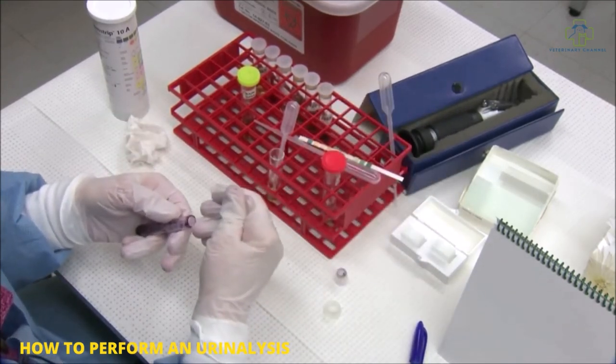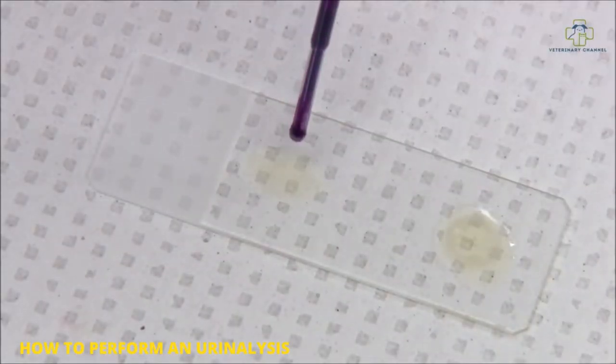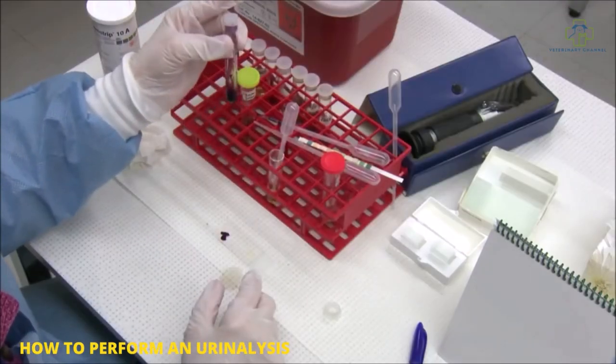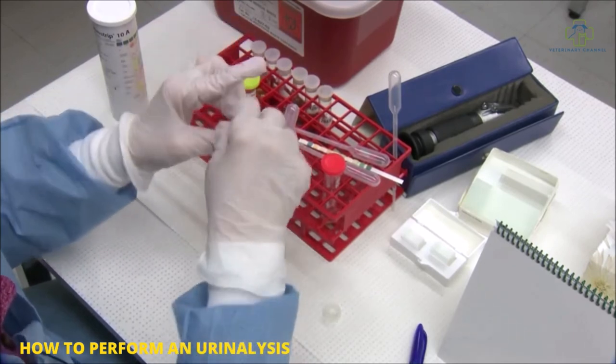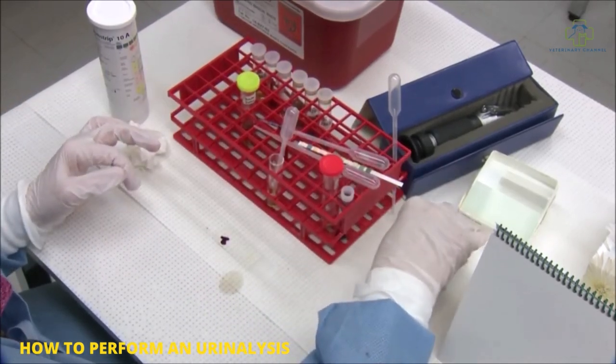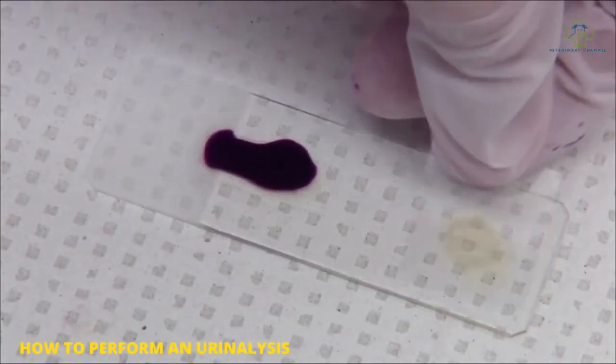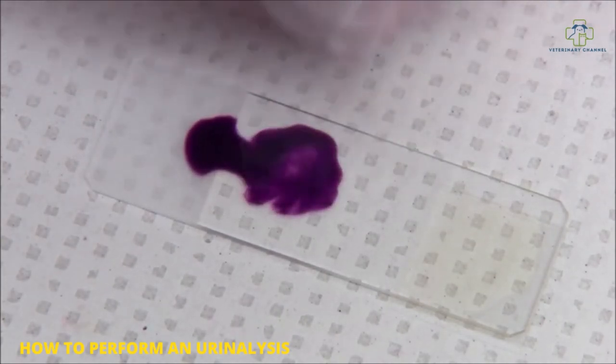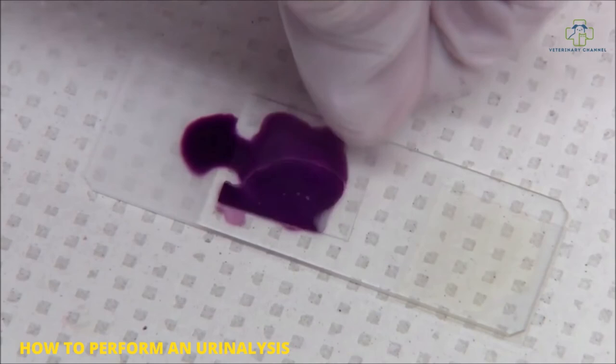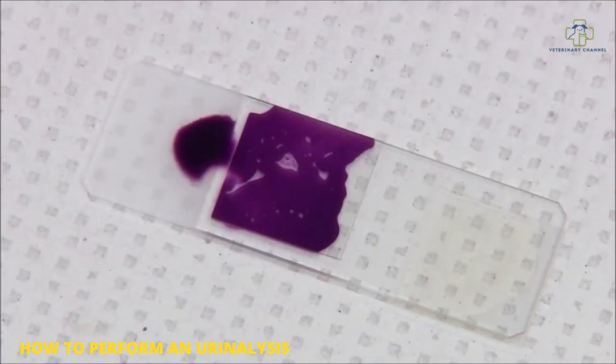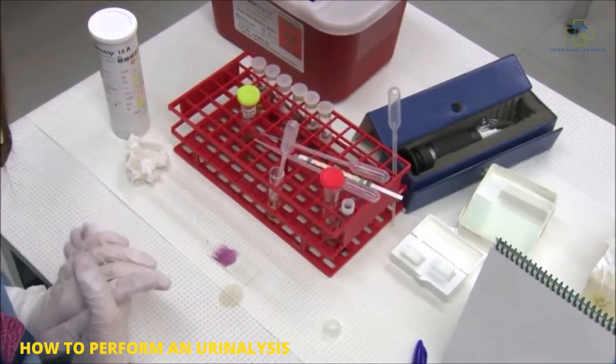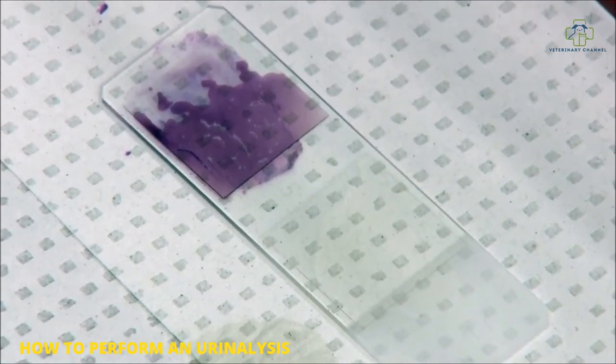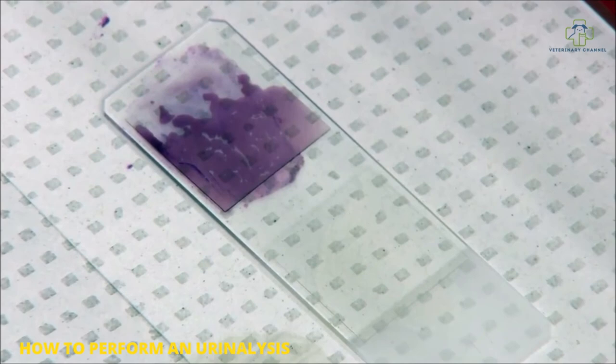Into one of those drops you add a drop of study stain. We aliquot our study stain into little containers so there's less chance of contamination. You want to cover slip both of your drops. The drop that has the study stain in it, you mix the stain and the sediment together with the edge of the cover slip, cover slip it, and you're ready to go to the microscope. Don't be worried if you get bubbles in your urine; bubbles are very good because you can focus on the bubble if you have a clear urine and know that you're on the right plane.